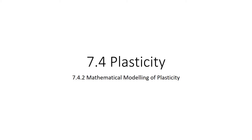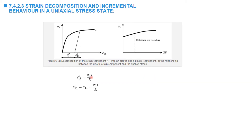In this video, we're going to introduce the ingredients of the plasticity model in uniaxial behavior. From now on, all our work will be based on the true stress true strain curve. Given a true stress true strain curve, the first step is to decompose the total strain into two components: elastic strain and plastic strain.